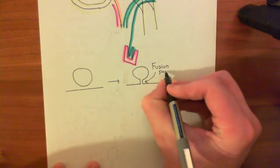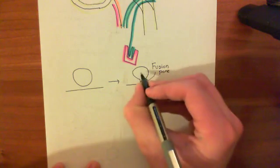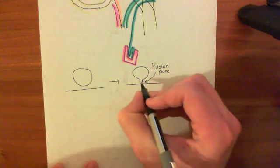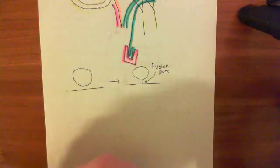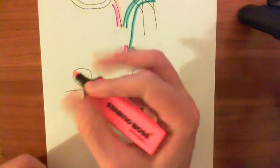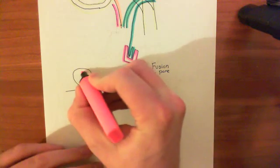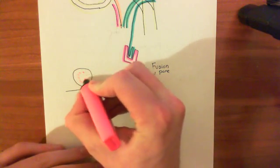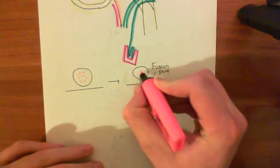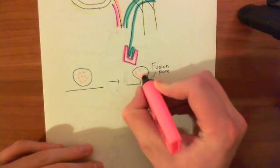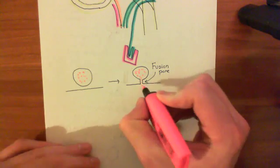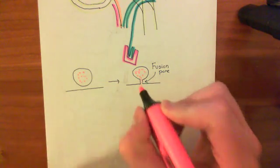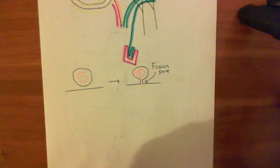Neurotransmitter can move out of the synaptic vesicle through this fusion pore. Here's the neurotransmitter within the synaptic vesicle, and basically it can move out, but only a little bit will trickle out.